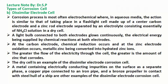Dissimilar Electrode Cell. The corrosion process is most often electrochemical where, in aqueous media, the action is similar to that taking place in a flashlight cell made up of a center carbon electrode and a zinc rod electrode separated by an electrolyte consisting essentially of ammonium chloride solution in a dry cell. A light bulb connected to both electrodes glows continuously, the electrical energy being supplied by chemical reactions at both electrodes.